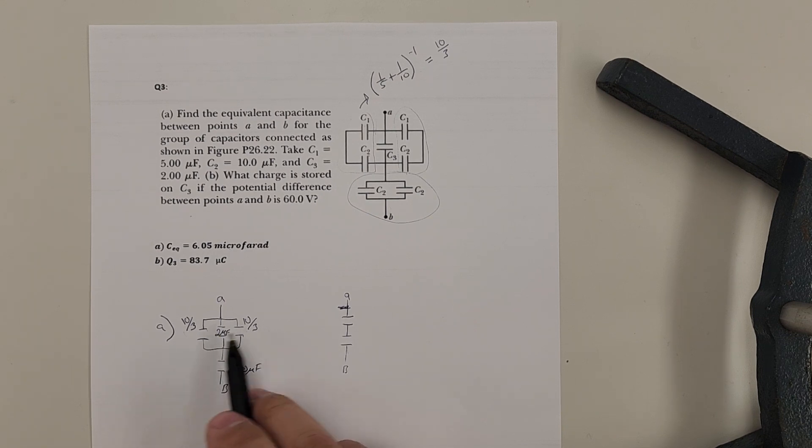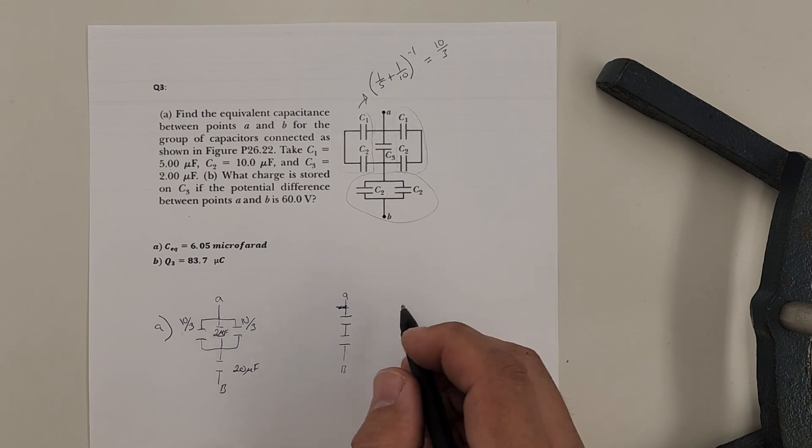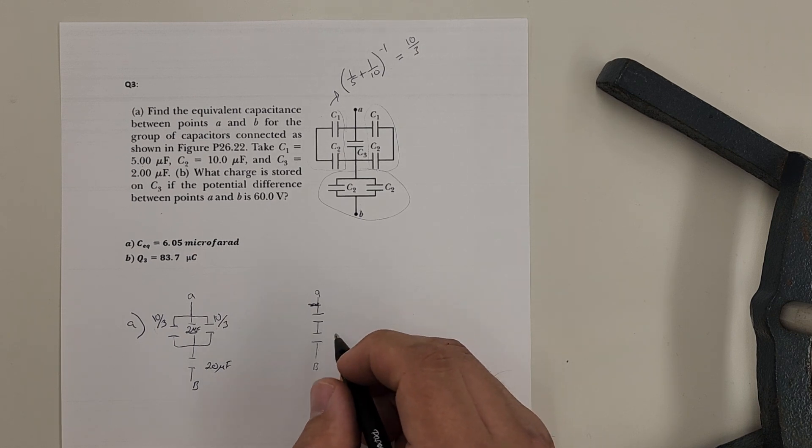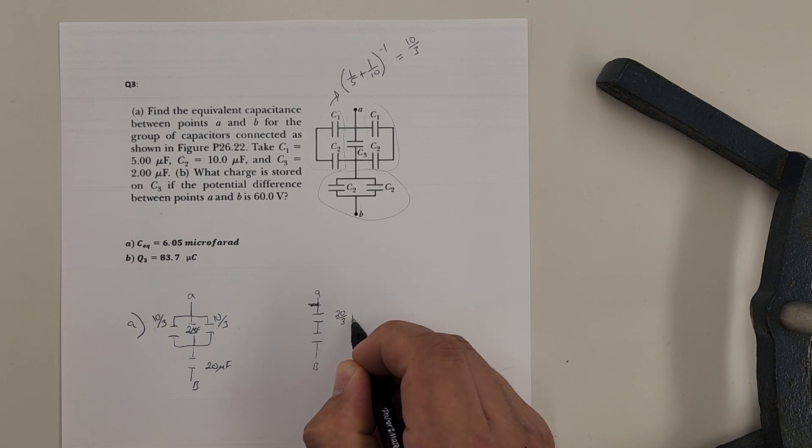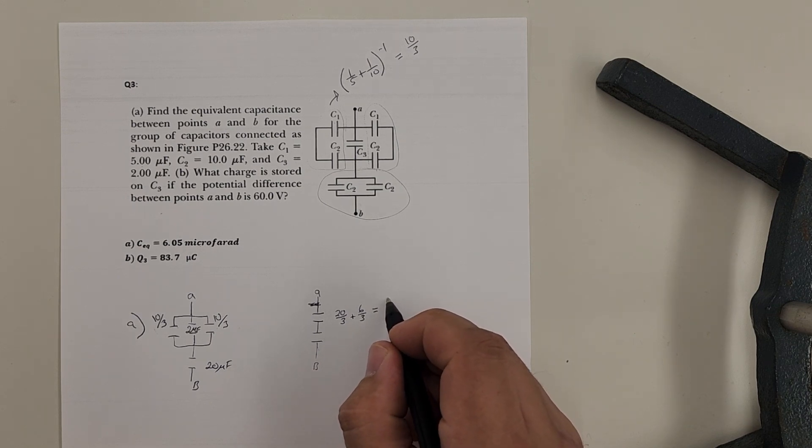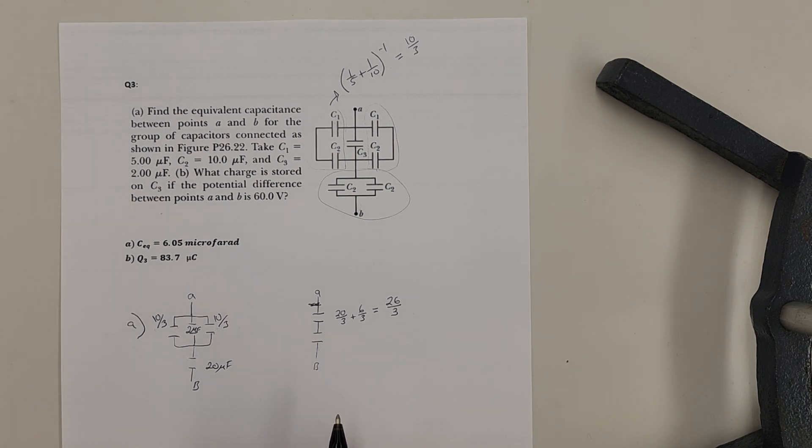So these being all in parallel, I just add them up. I'll get two microfarad plus the twenty over three. Okay. Or you can think of as twenty over three plus an additional six over three if I want to do fractionals. And that'll give you twenty six over three. Okay. Twenty six over three.